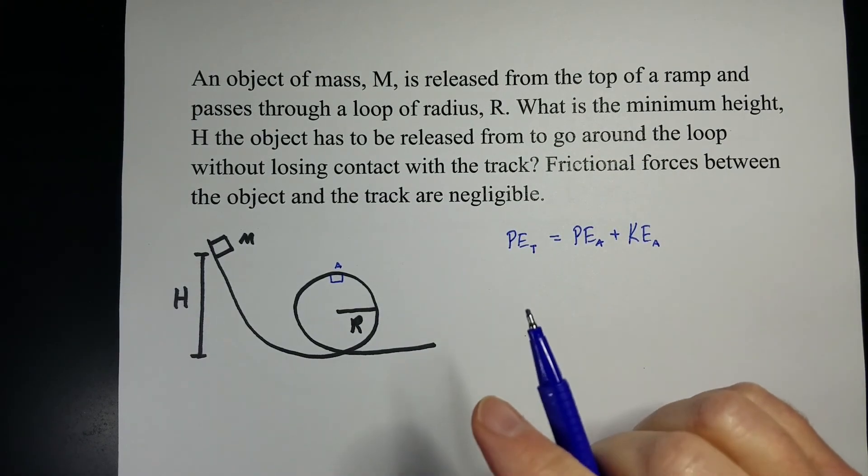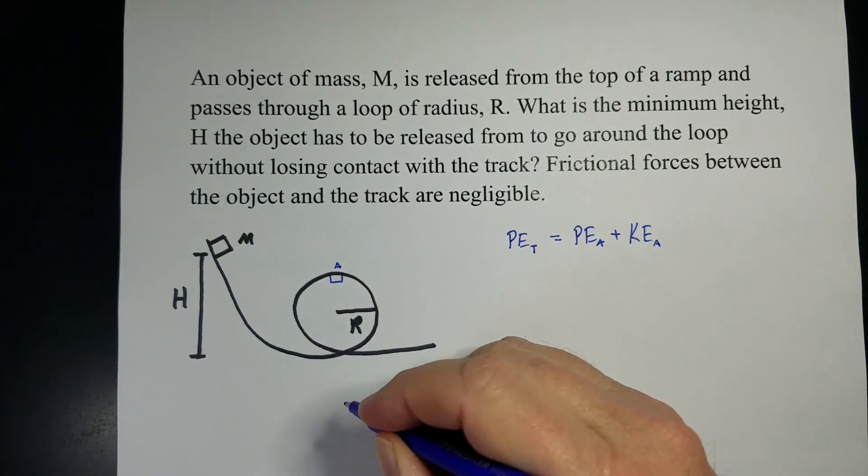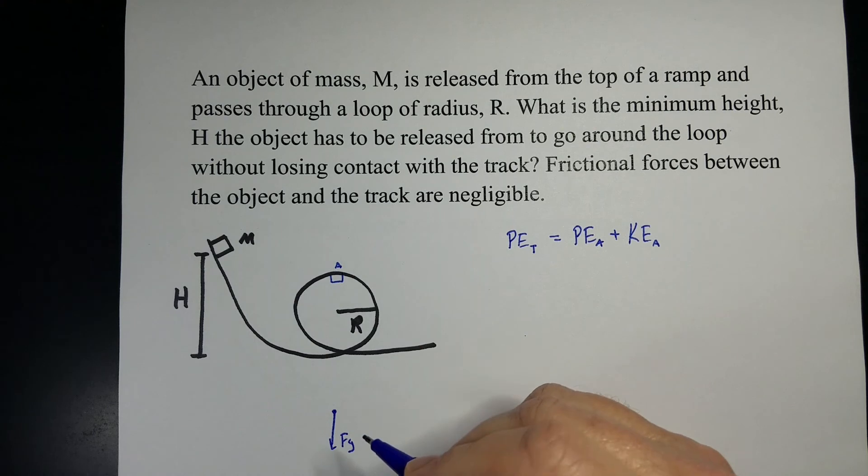The circular motion part of it is this. At the very top, if we were to draw a free body diagram, we have weight acting on the object. Now, centripetal force is just another force renamed. So in this case, it's the weight.